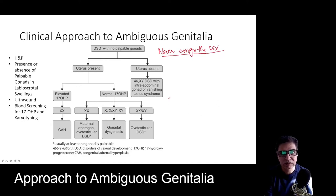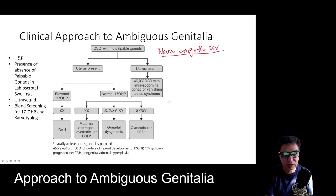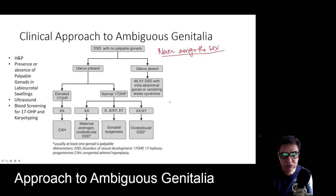For the local examination, look at the labioscrotal swelling for the presence of any palpable gonads. This is the first specific clinical step when approaching a child with ambiguous genitalia. At the same time, take bloods — screening for 17-hydroxyprogesterone is very important, since congenital adrenal hyperplasia is one of the common causes of ambiguous genitalia. You also need to determine the karyotype, whether XX, XY, XO, XXY, or mosaicism.